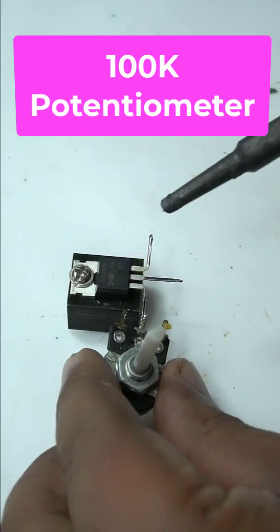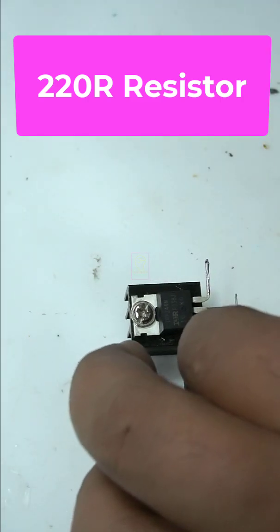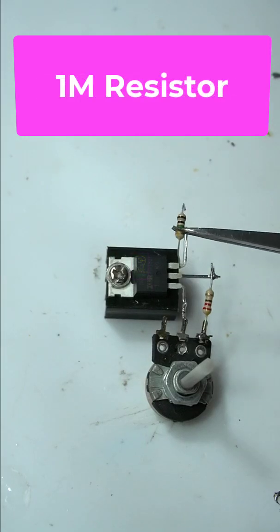We are going to make a 0-38V variable power supply using IRFC44N N-channel MOSFET. The full making video link is available in the description box.